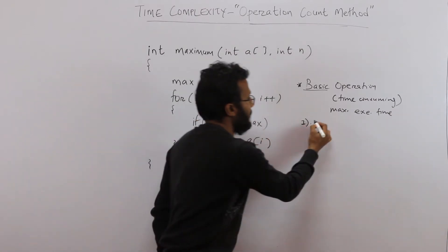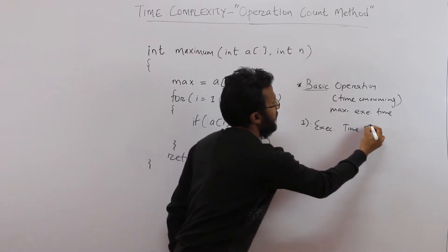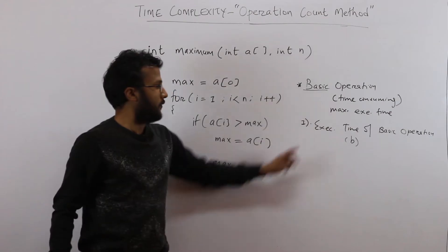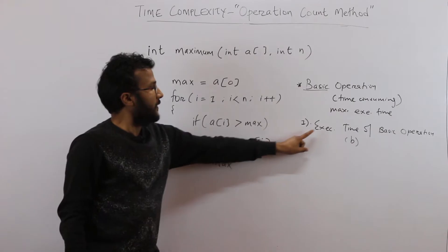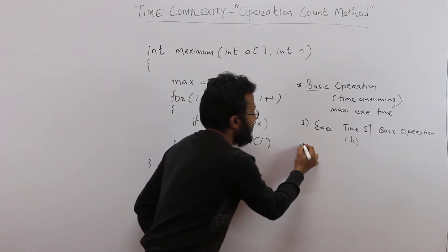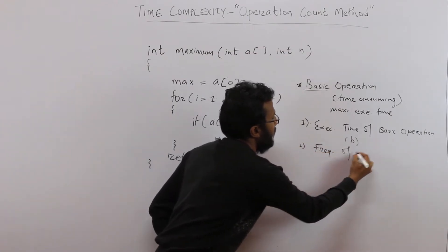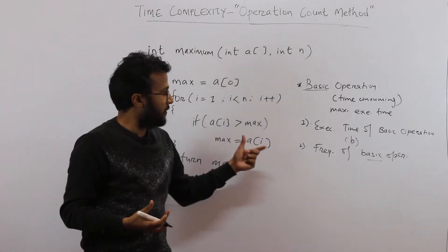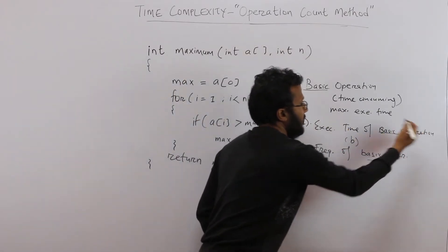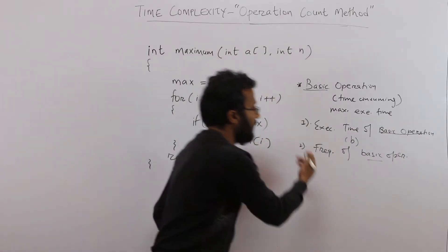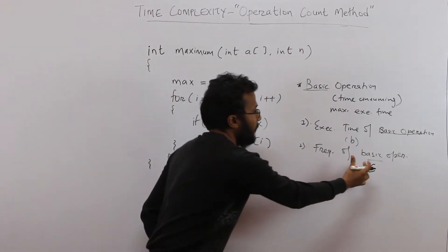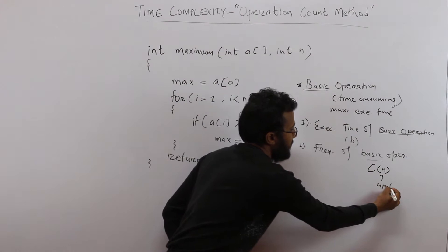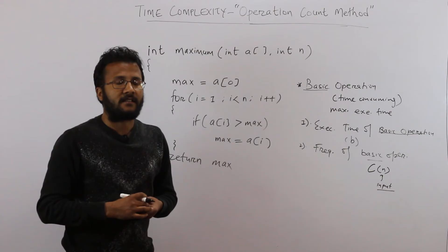The first step is to find out the execution time of the basic operation — let that be small b. First identify the basic operation, then find out its execution time. Next, find out the frequency of the basic operation: how many times it is being executed in the algorithm. That count can be a function of n, which is the input instance.